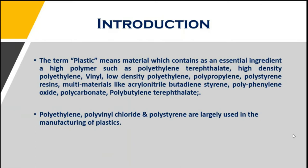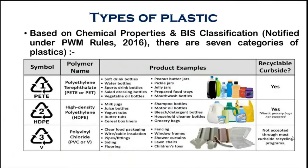Plastics used in day-to-day life mainly contain polyethylene, polyvinyl chloride, and polystyrene. Based on chemical properties and the Bureau of Indian Standards classification notified in the Plastic Waste Management Rules 2016, there are seven categories of plastics. The first is PETE-1, that is polyethylene terephthalate. These products are recyclable.